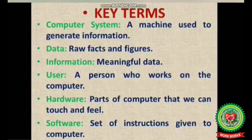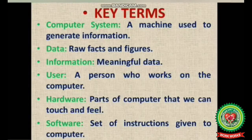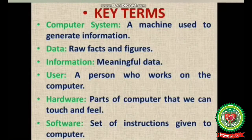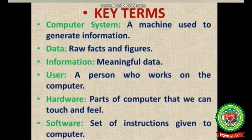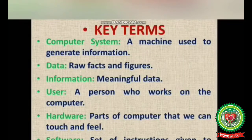Before proceeding with the chapter, let's discuss the important key terms of today's topic. The first key term is computer system — a machine used to generate information. Second, data — raw facts and figures. Third, information — meaningful data. Fourth, user — a person who works on the computer. Fifth, hardware — parts of the computer that we can touch and feel.